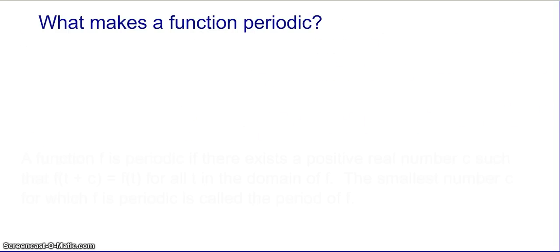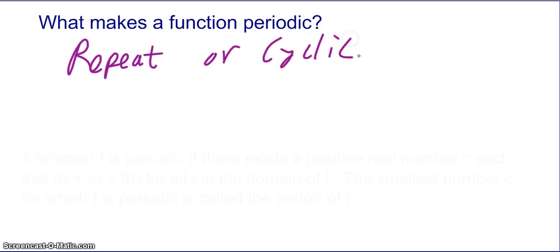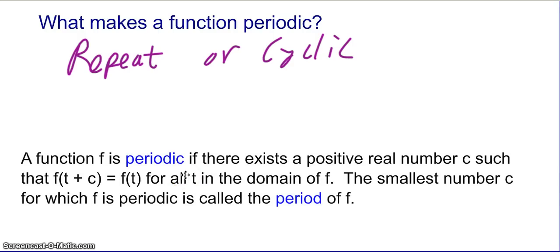Now we're going to talk about the idea of a function being periodic. A function f is periodic if there exists a positive real number c such that f of t plus c equals f of t for all t in the domain of f. The smallest number c for which f is periodic is called the period of f. That is our formal definition of a periodic function.